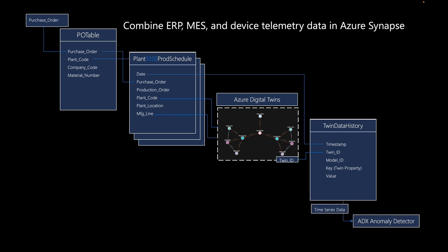Lastly, she can take the time series data for those digital twins and use Azure Data Explorer to analyze the time series data. For example, she can use the ADX anomaly detector to automatically search for anomalies in the time series data from those twins.